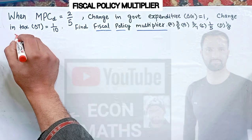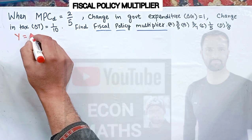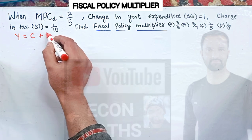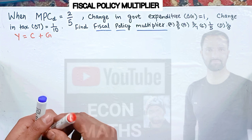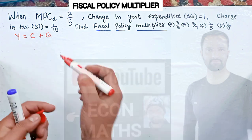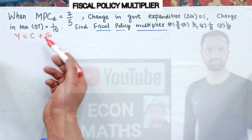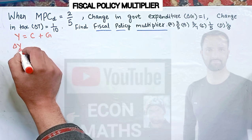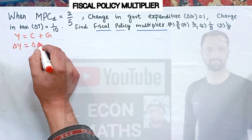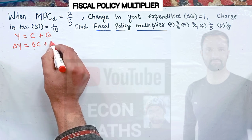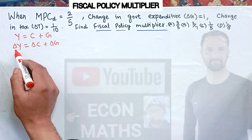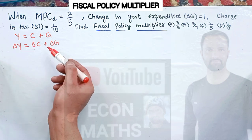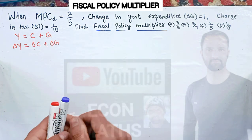Suppose our total income is equal to consumption expenditure plus government expenditure. We do not include investment or net exports here. So income is a function of consumption and government expenditure. Therefore, change in total income (GDP) will be equal to change in consumption plus change in government expenditure.